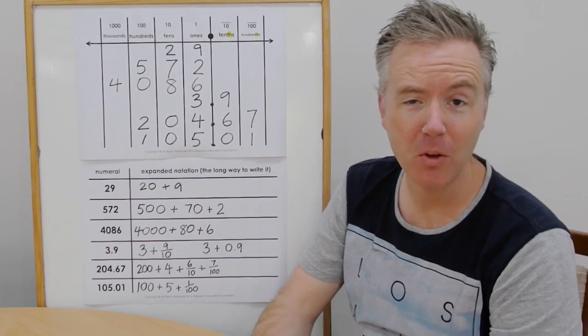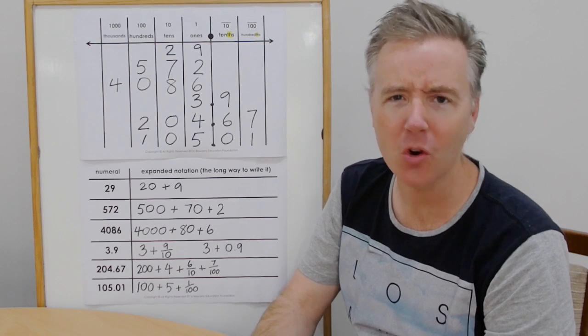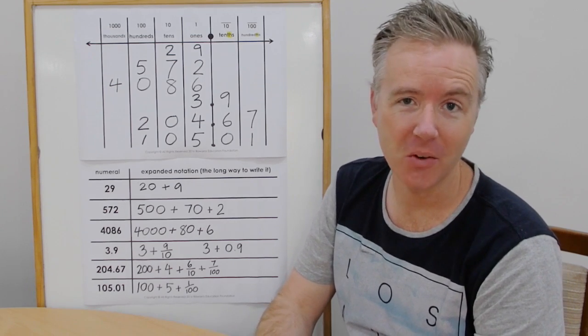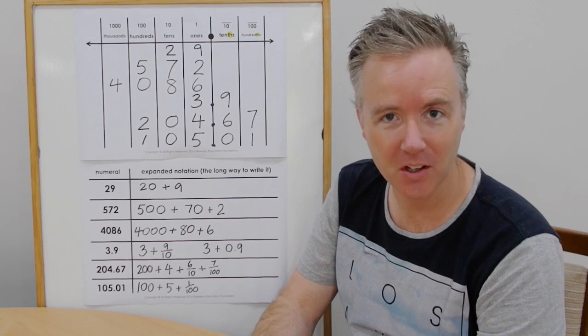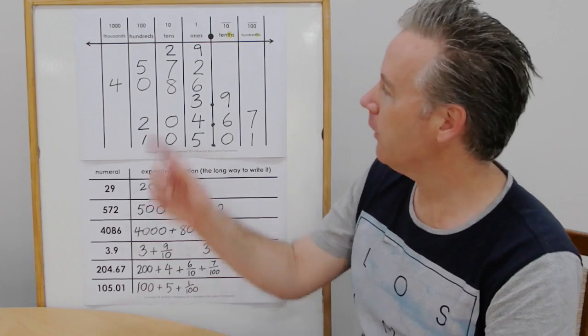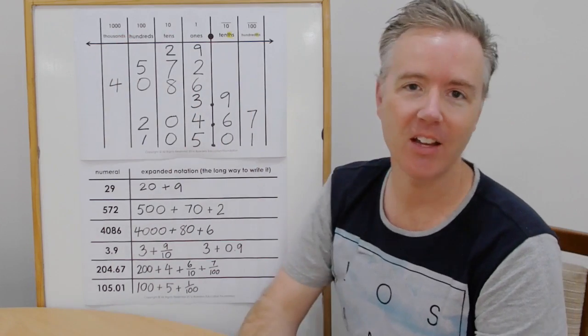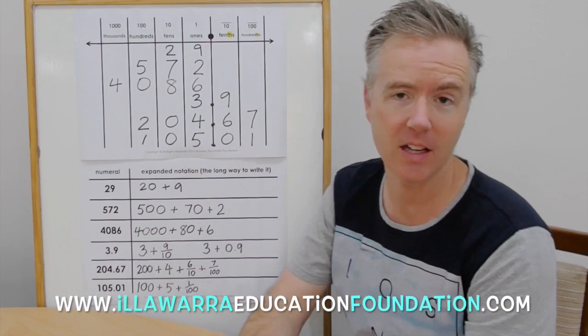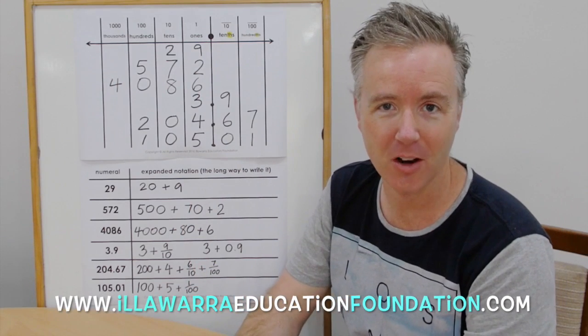And there you go. I hope you found that helpful today. Just a nice short one to really show place value is not as tricky as a lot of people think. Just remember, if you know your column headings and you know how to actually read numbers, which is why we need to understand the expanded notation, we should be on the right track.